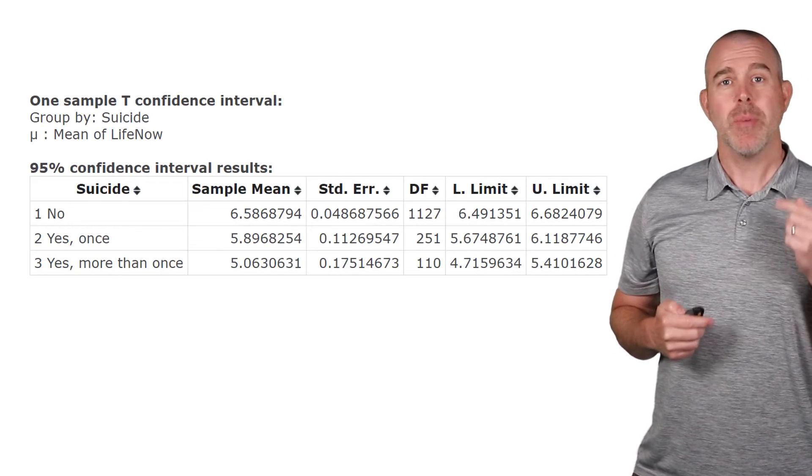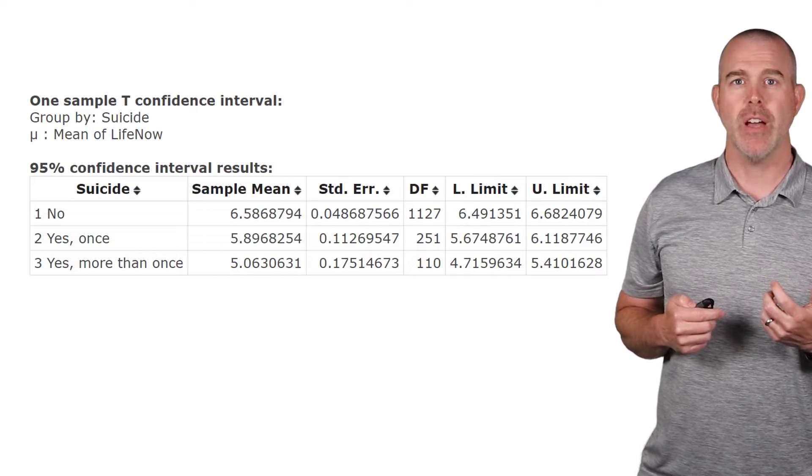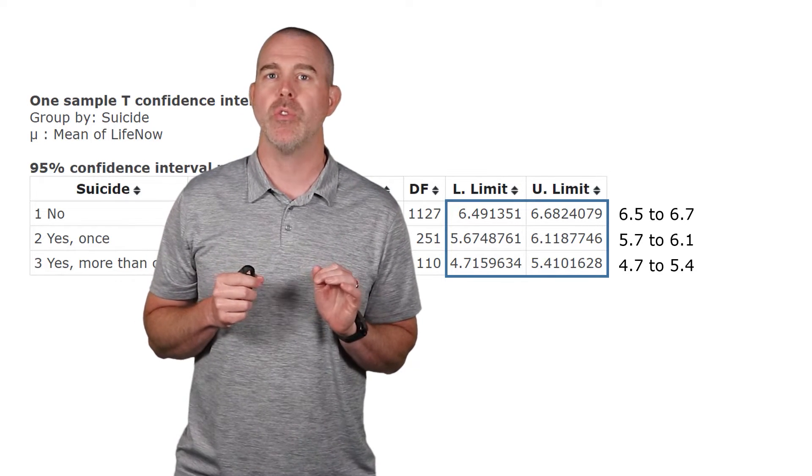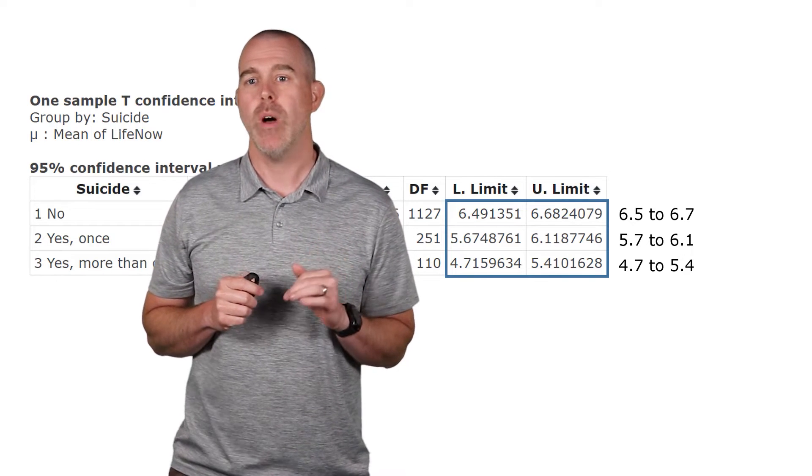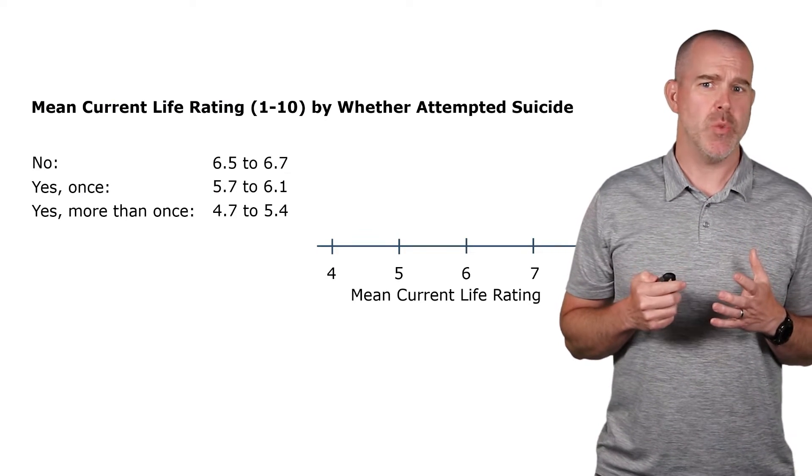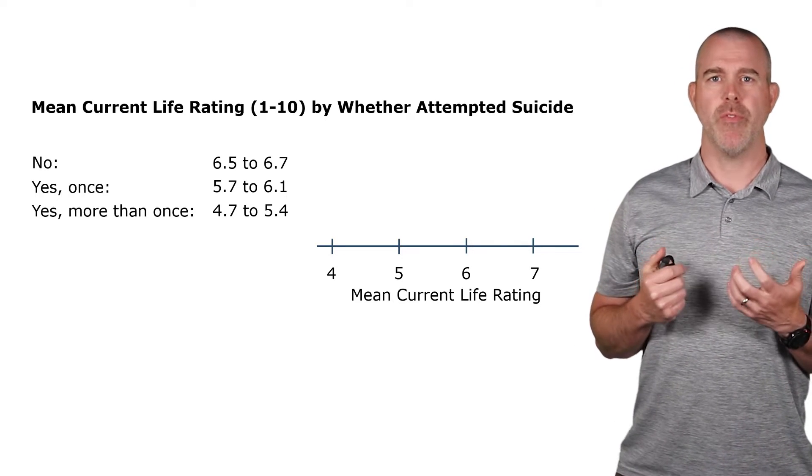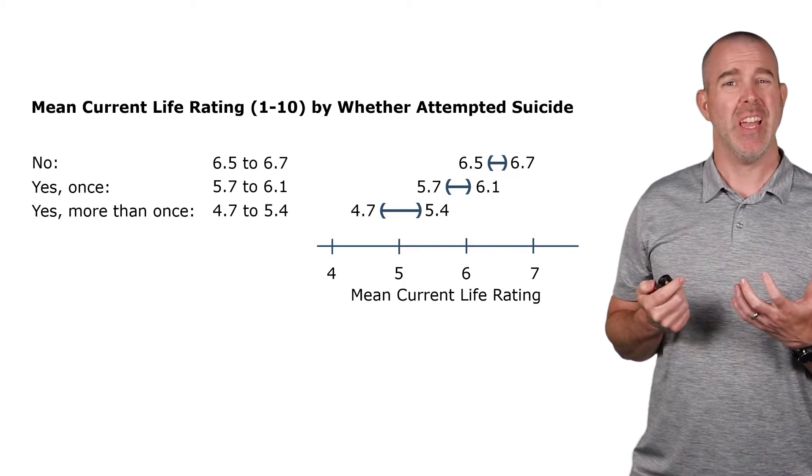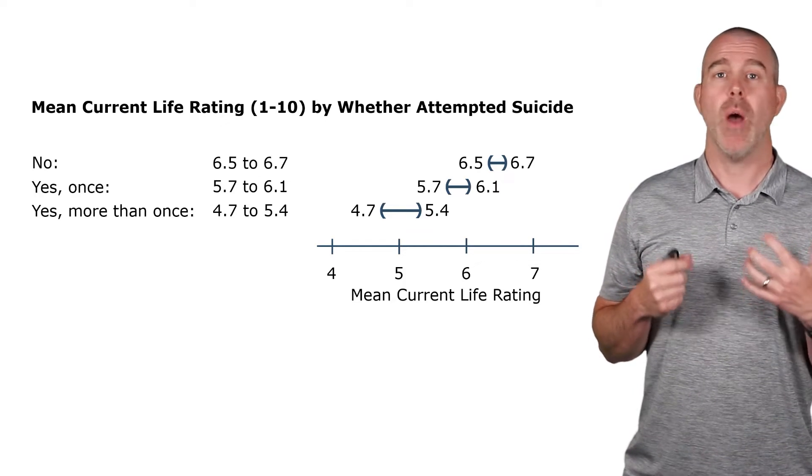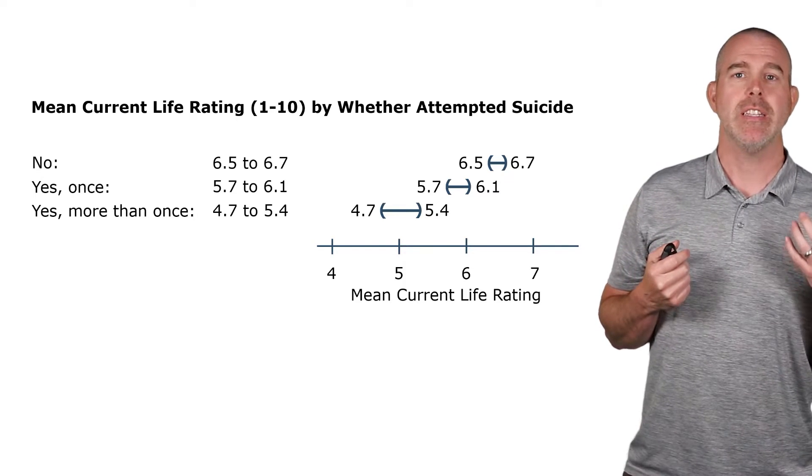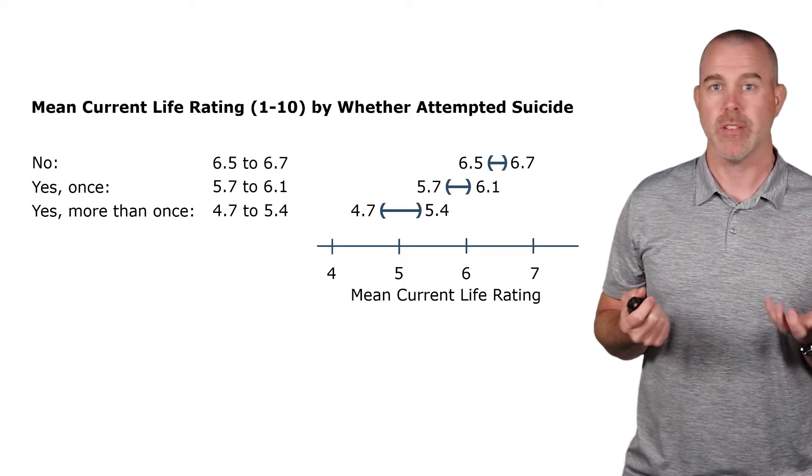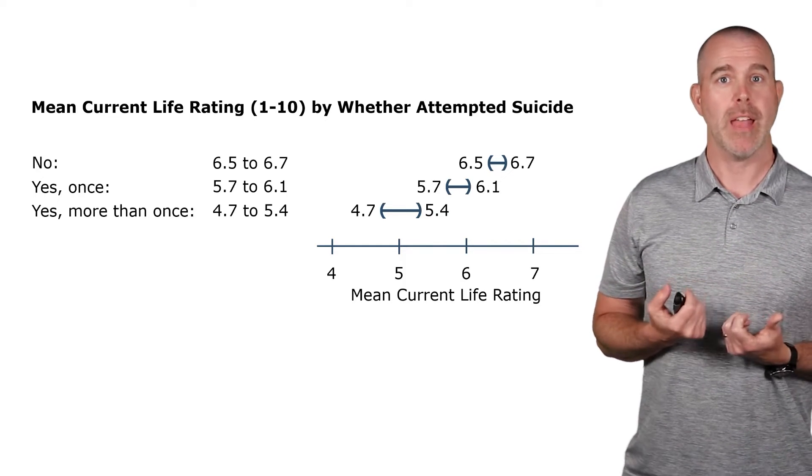Now, just to reinforce this, I did some confidence intervals. So I have these confidence intervals from StatCrunch, and if we look at those and round them, we get 6.5 to 6.7 happiness rating for those who said no, 5.7 to 6.1 for those who said yes once, and then 4.7 to 5.4 for those who said yes more than once. If we clean those up, they look like this. Let's visualize them and make a scale from 4 to 7. And here we can see that all of these confidence intervals are separate. None of them overlap. So every group appears to have a statistically significantly different mean from the other groups. That just reinforces our ANOVA that at least one of the means is different from the others. In fact, they all look different from each other.